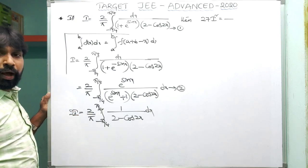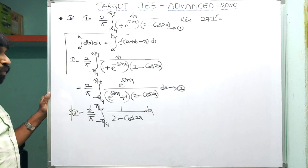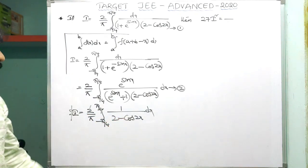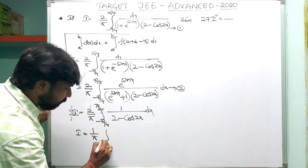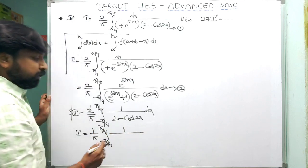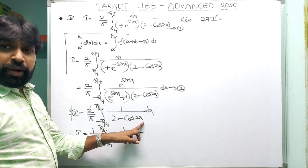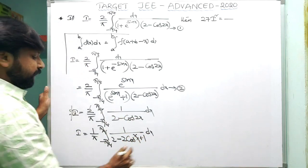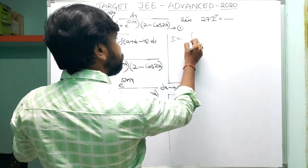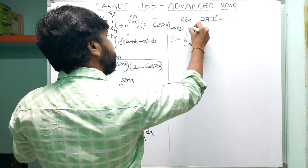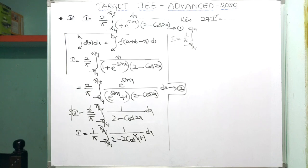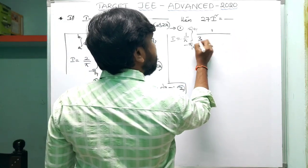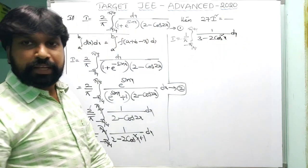After cancellation, 2I = (2/π) × integral from −π/4 to π/4 of 1/(2 − cos2x) dx. The 2s cancel: I = (1/π) × integral from −π/4 to π/4 of 1/(2 − cos2x) dx. Apply the formula cos2x = 2cos²x − 1, so 2 − cos2x = 2 − (2cos²x − 1) = 3 − 2cos²x.